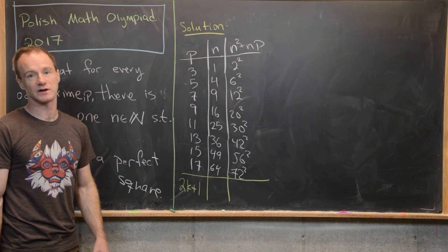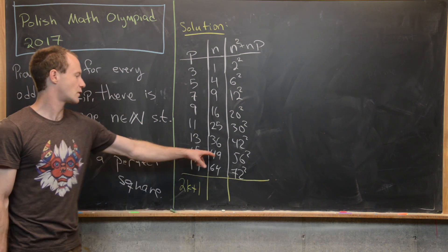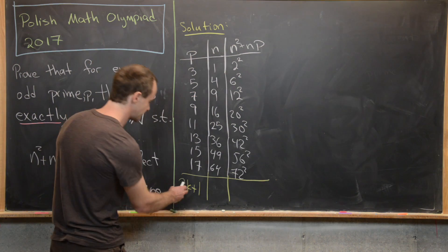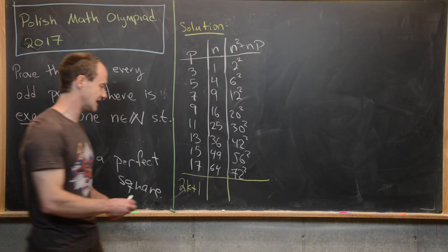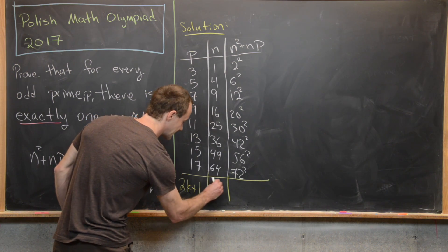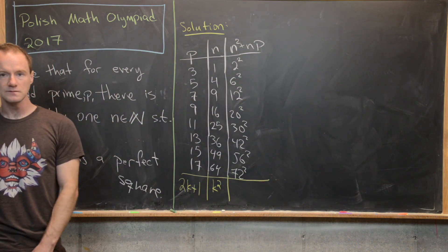15 minus 1 is 14, half of that is 7, squared is 49, so that works. So if I take 1 away from this and take half of it, I get k, I square it, I get k squared. Great.